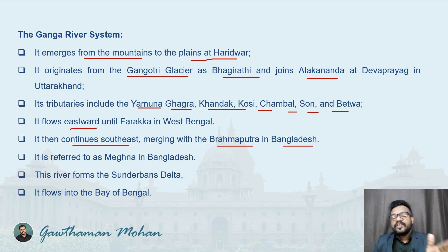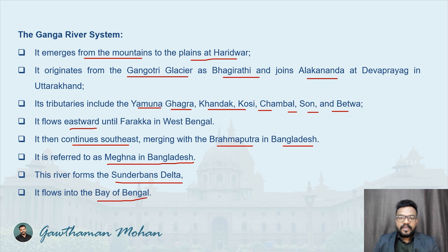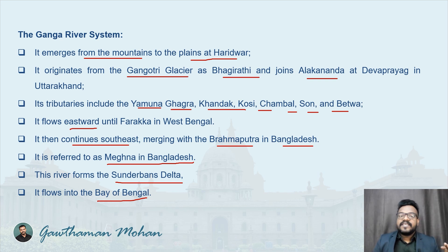The Ganges merges with the Brahmaputra in Bangladesh and is referred to as Meghna in Bangladesh. This river forms the Sundarbans delta, one of the largest deltas in the world, and finally flows into the Bay of Bengal. So the Indus flows west into the Arabian Sea via Pakistan, while the Ganges flows east into the Bay of Bengal via Bangladesh.